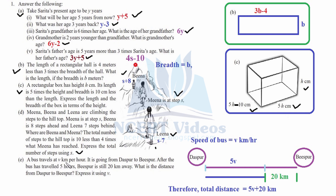Part e: a bus travels at v km per hour going from one town to another. After the bus has traveled for 5 hours, B-sport is still 20 km away. We have to find the total distance expressed using v. The distance traveled is 5 times v, which is 5v. Therefore the total distance from A-sport to B-sport is 5v plus 20 kilometers.